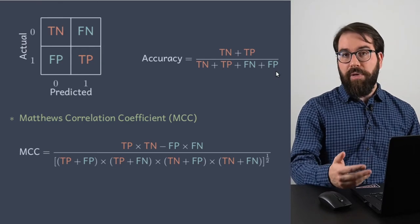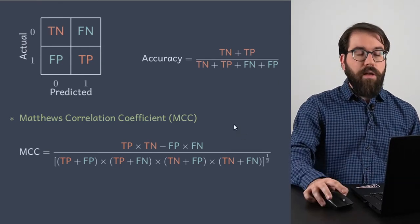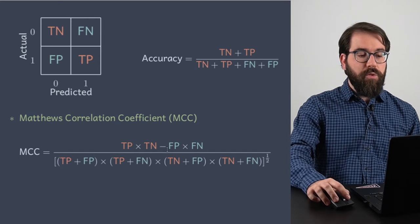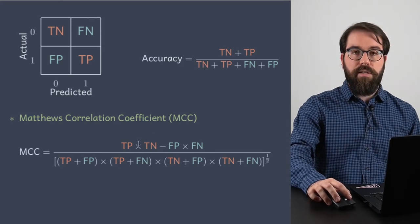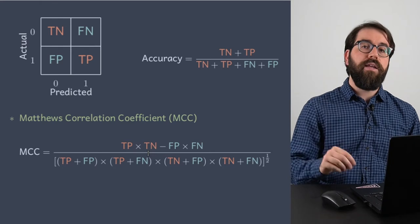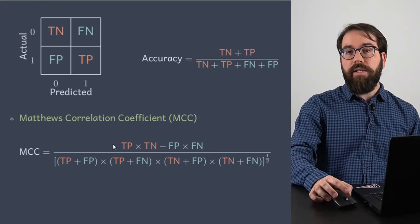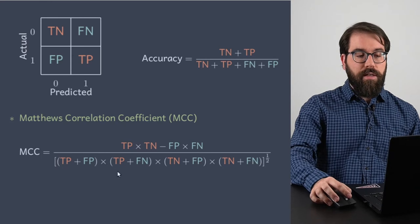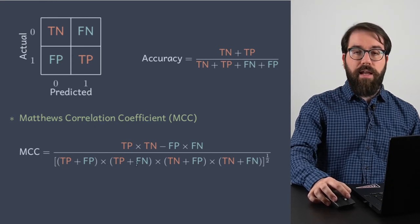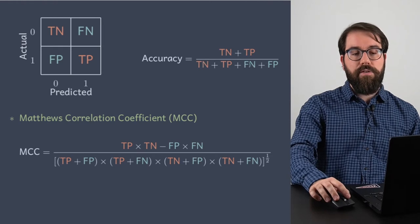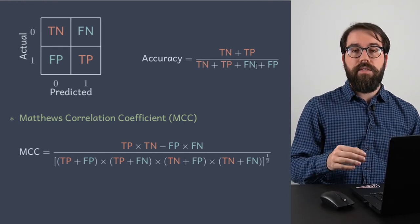The Matthews correlation coefficient has a more complicated formula; it's often called MCC. Where you had a sum in the numerator of the accuracy, now you have a multiplication. And you don't only have the true positives and true negatives in the numerator — you also have this term subtracted by the multiplication of the errors. So in the numerator you already have all four terms of your confusion matrix. The denominator is just a normalization constant that's always positive, and it makes the overall MCC value be between minus 1 and 1, just as the denominator keeps accuracy between 0 and 1.